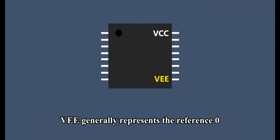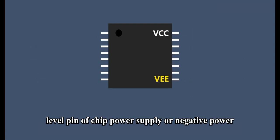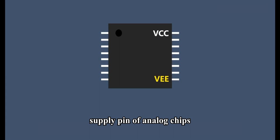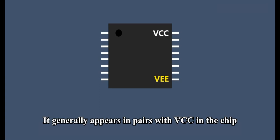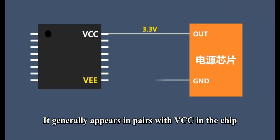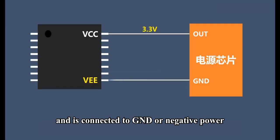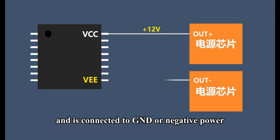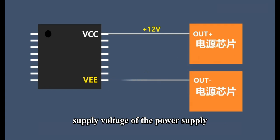VEE generally represents the reference zero-level pin of chip power supply or the negative power supply pin of analog chips. It generally appears in pairs with VCC in the chip and is connected to GND or negative power supply voltage of the power supply.